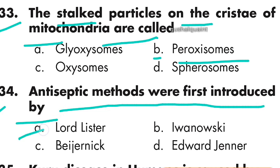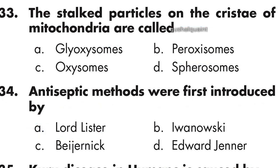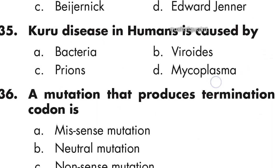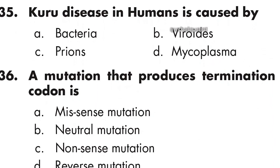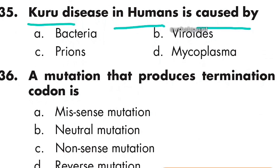Question number 34: Antiseptic methods were first introduced by Lord Lister. Option A is right — Lord Lister. Question number 35: Kuru disease in humans is caused by prions. Option C is right — prions.